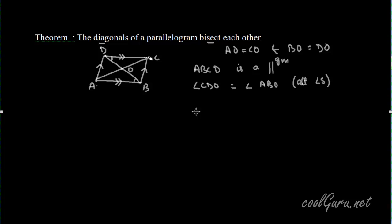And in the parallel lines DC and AB, if we consider CA to be transversal, then angle DCO is equal to angle BAO. These are also a pair of alternate angles.